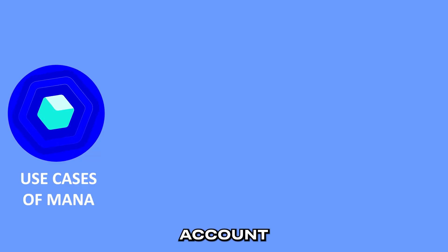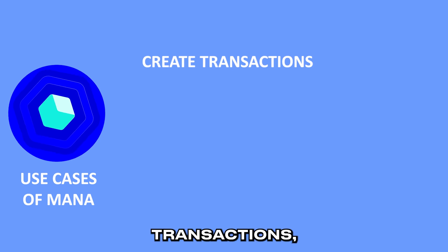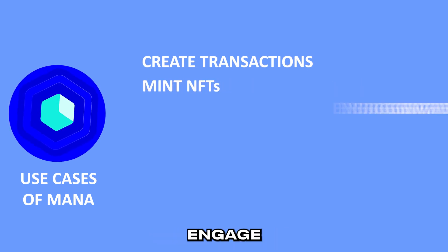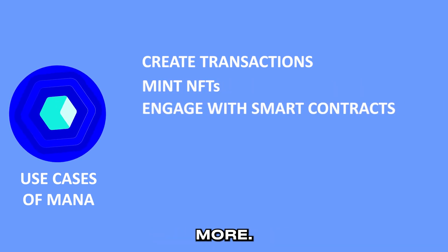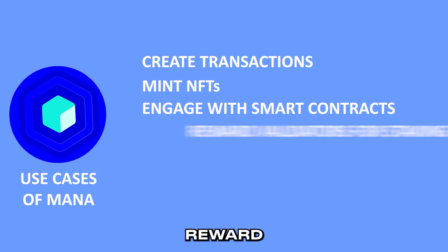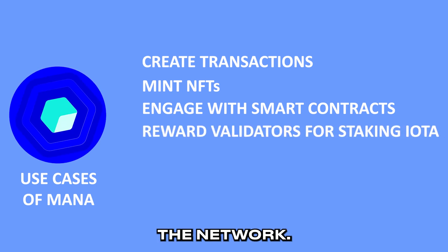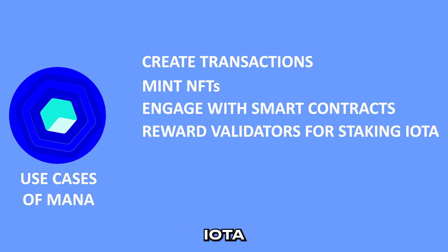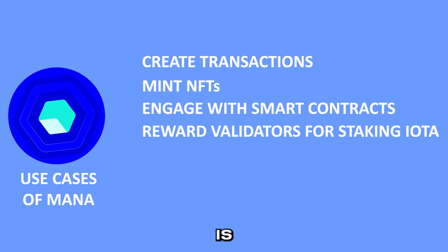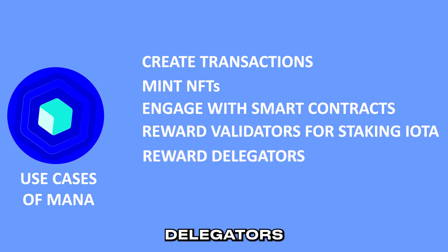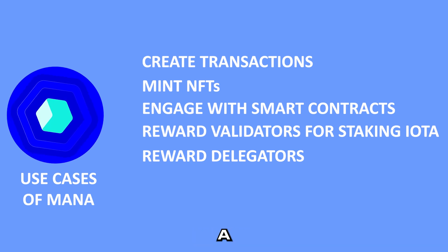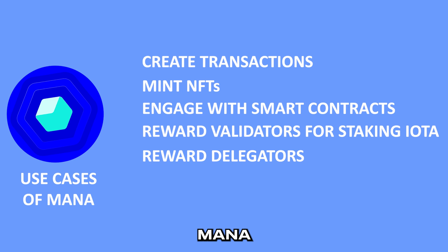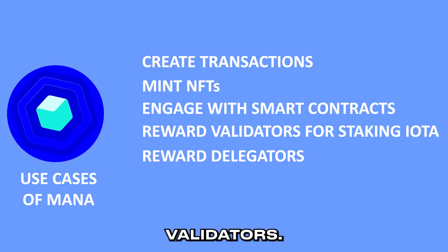MANA allows any IOTA account holder to create transactions, mint NFTs, engage with smart contracts, and more. MANA is also used to reward validators for securing the network — so instead of rewarding IOTA tokens, which could result in increased sell pressure, MANA is earned instead. MANA is also used to reward delegators for assigning their voting power to a validator, who keep mutually agreed parts of the MANA rewards earned by those validators.